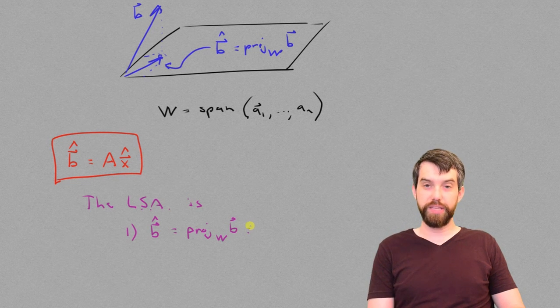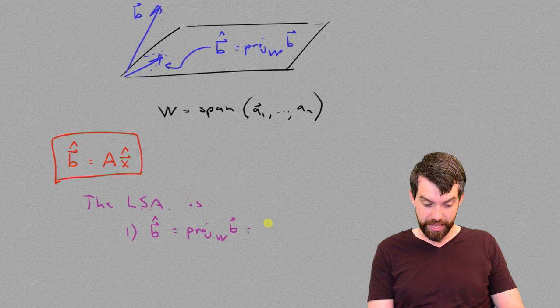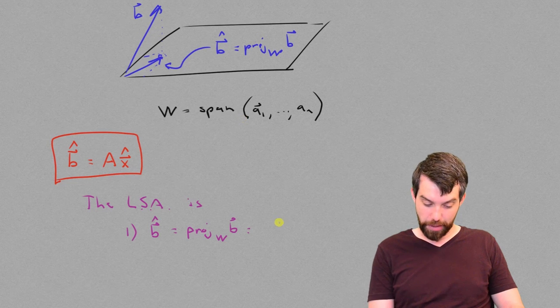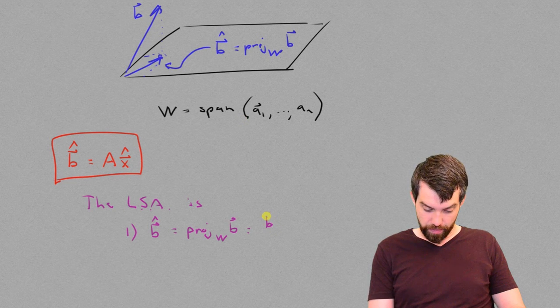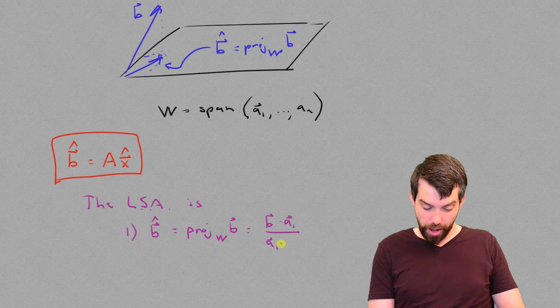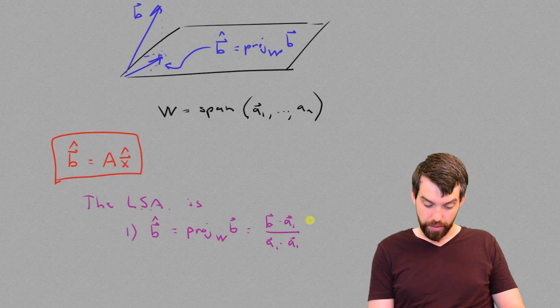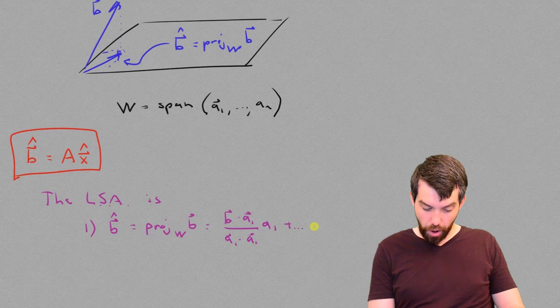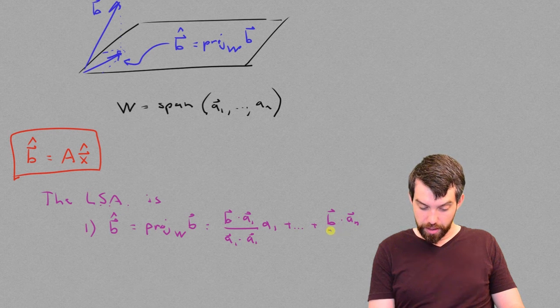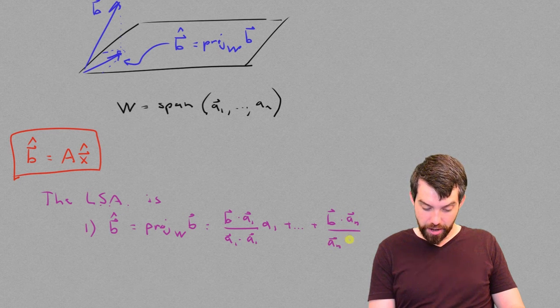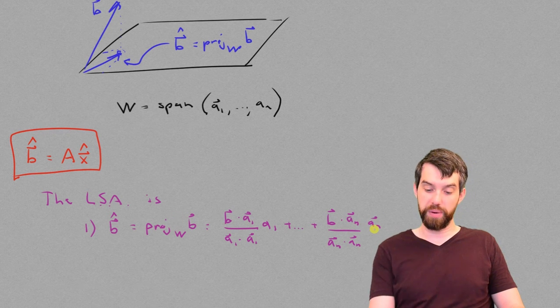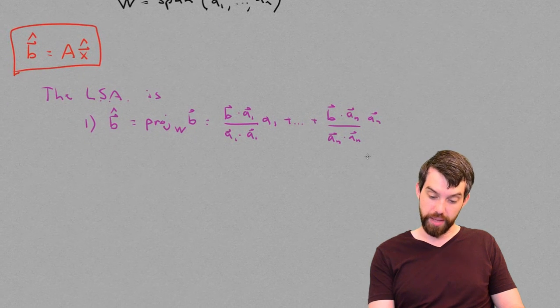And broadly, this projection is a shorthand. We would say that if the vectors a1 down to an are going to generate the subspace w, that this is the vector b dotted with a1 divided by a1 dotted with a1 in the a1 direction, plus all the way down to the vector b dotted with the an divided by the an dotted with the an all in the an direction. So, that's my projection formula for figuring out this vector b hat.